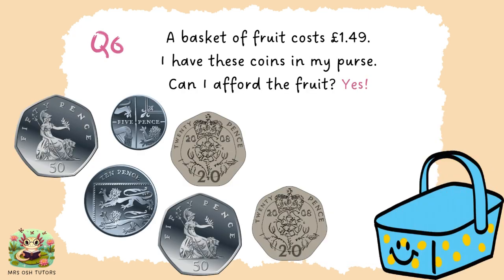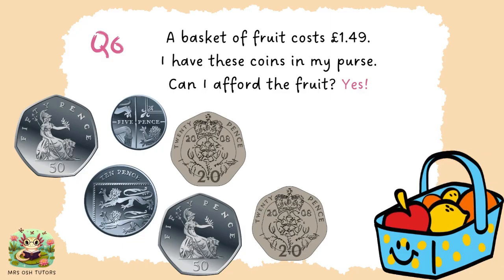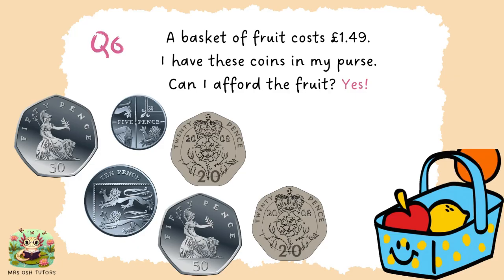Question six: yes, we can afford the fruit. I added up the two 50ps first, because 50 plus 50 makes 100, and there are 100 pence in a pound, so the two 50s make one pound. Then the two 20s added together is 40, so I've got one pound 40. Then I add the 10p to get one pound 50, and then the 5p, giving me one pound 55. So I do have enough money to buy the fruit. You might want to work out the change — I would get 6p change.